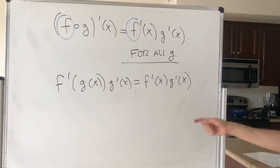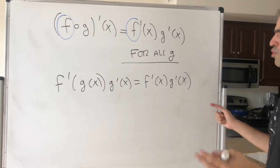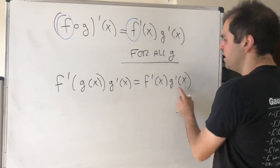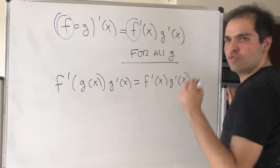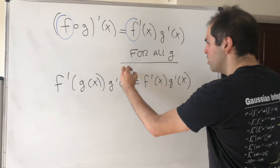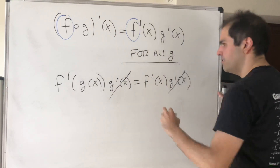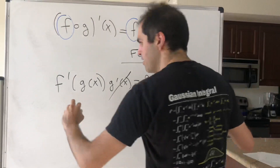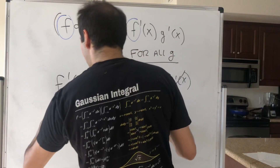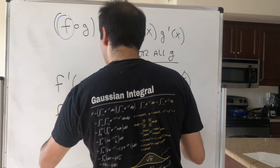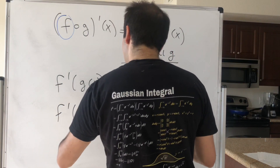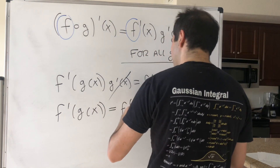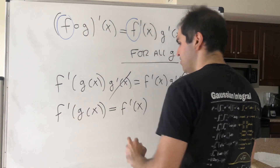Since this is true for every g, we can assume g prime is non-zero, so let's cancel it out. The question becomes: for which f is it true that f prime of g of x equals f prime of x?